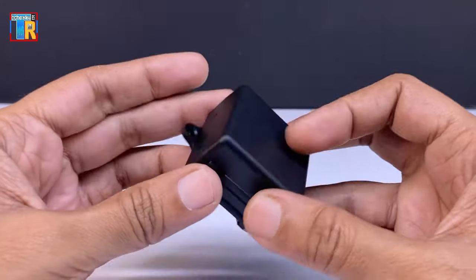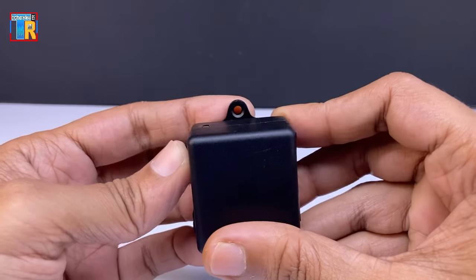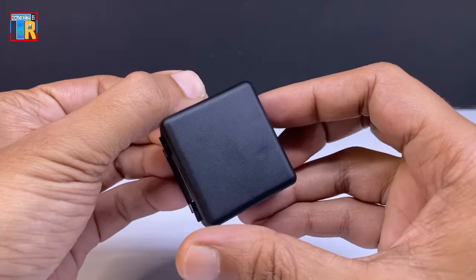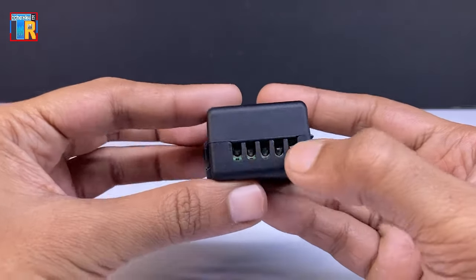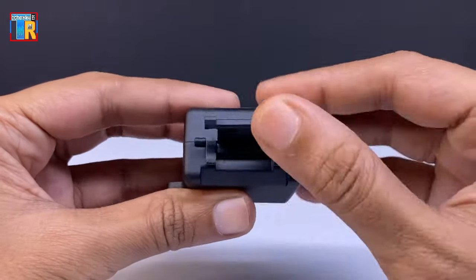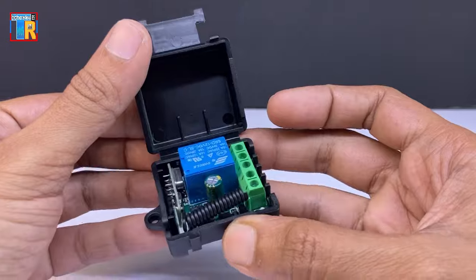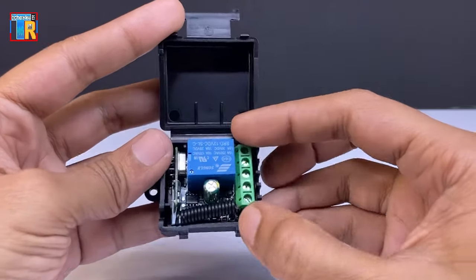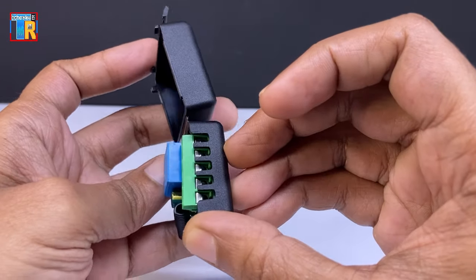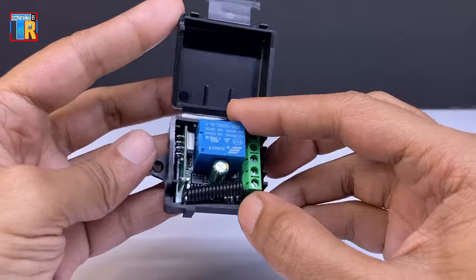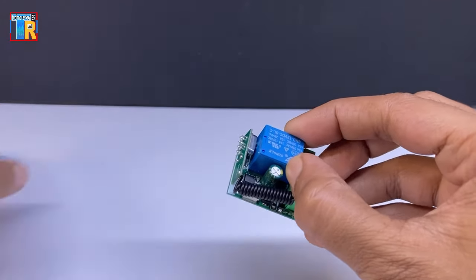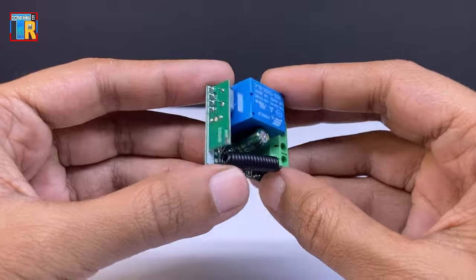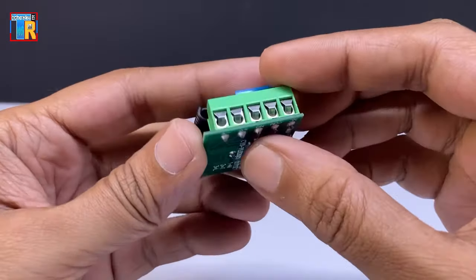The relay module comes in an attractive box and can be mounted using screws if required. Here are some holes for wires. This is a 12 volt 10 ampere relay, an RF module with some other components.